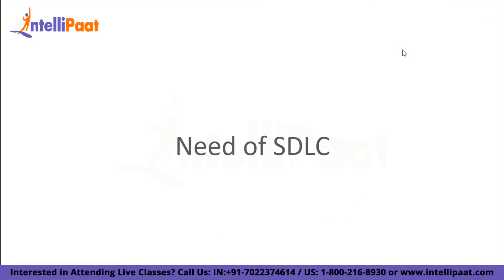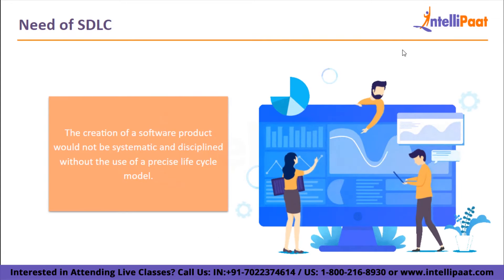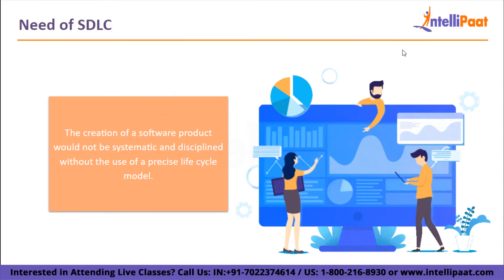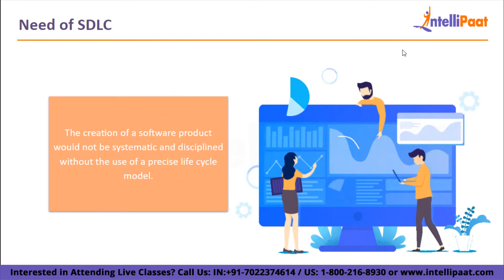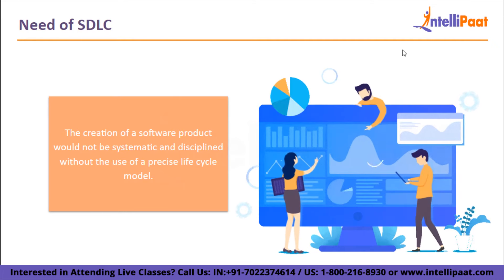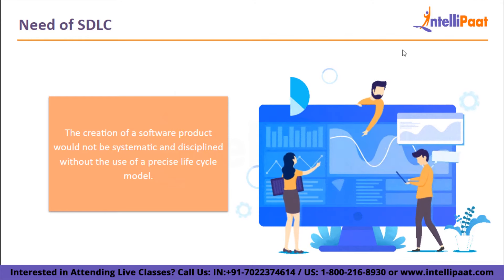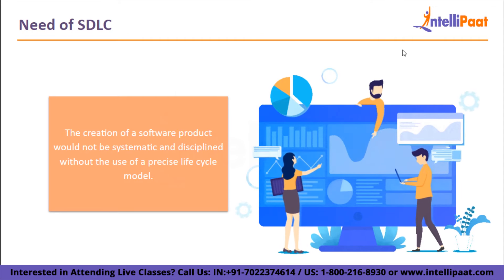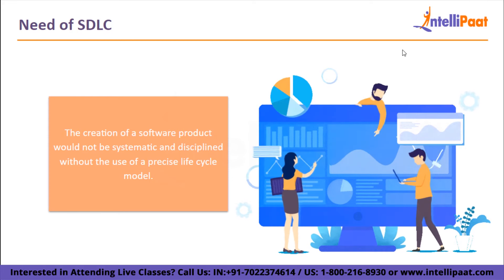Next, we will see the need of SDLC. The development team must choose a life cycle model appropriate for a specific strategy and adhere to it. Without a precise life cycle model, the creation of a software product would not be systematic and disciplined. There needs to be agreement among team members regarding when and what to do. Without one, it would indicate disorder and project failure. The criteria for entering and leaving each phase are described in a software life cycle model, and without it, it is impossible to detect those entry and exit criteria. It also becomes difficult for project managers to track the project's development.